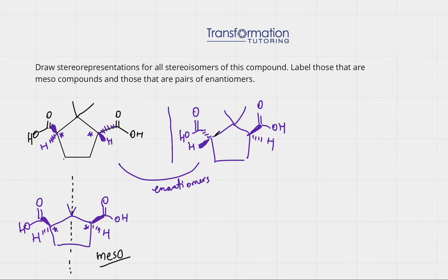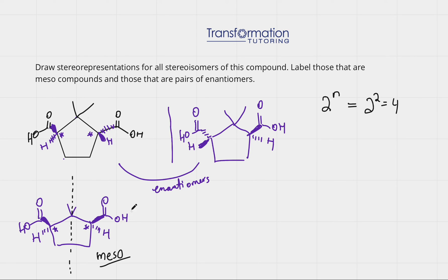So these are all of my options for stereoisomers for this compound. Because I have two chiral carbons, the formula is 2^n to figure out the maximum number of stereoisomers, where n is the number of chiral centers. I had two chiral centers, so 2^2 equals four — the maximum number of stereoisomers would be four. However, this molecule has three stereoisomers because one of them is a meso molecule, and a meso molecule is achiral, meaning its mirror image is superimposable. So these are my three stereoisomers.